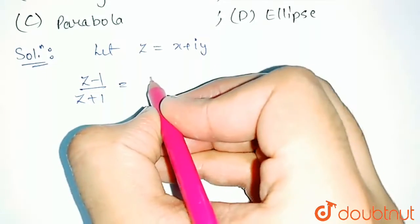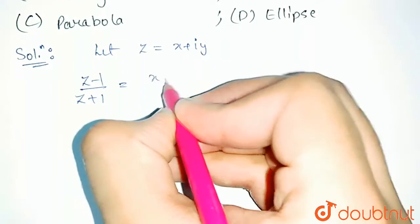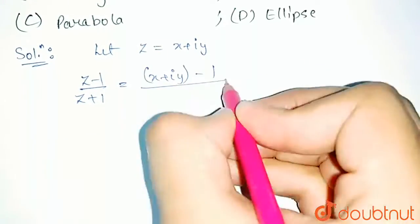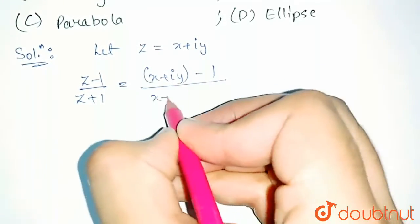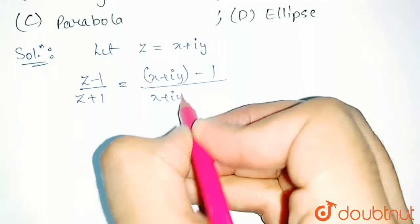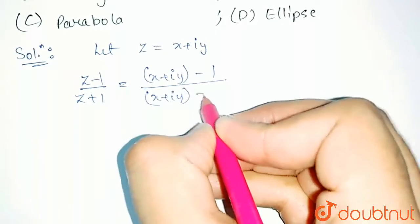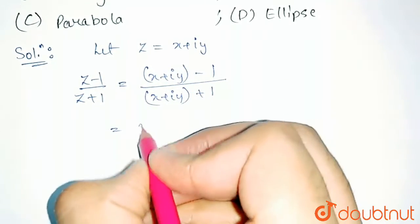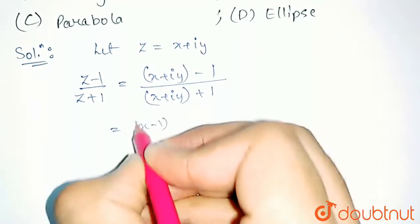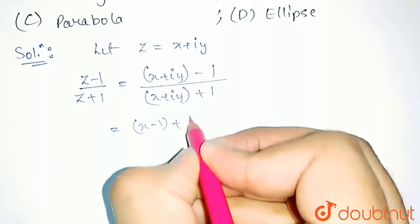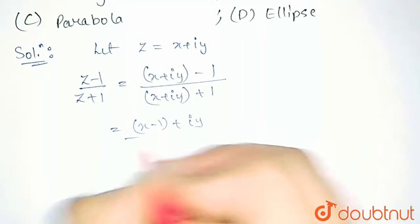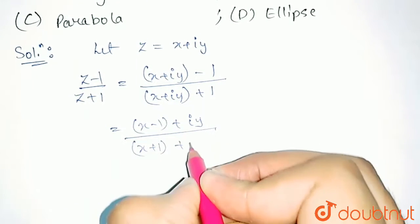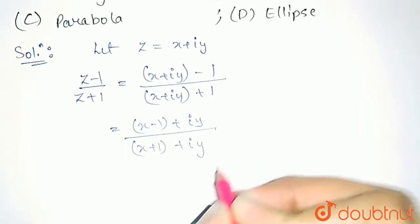So z minus 1 is (x + iy - 1) divided by (x + iy + 1), which gives us the real part as (x minus 1) plus iota y, divided by (x plus 1) plus iota y.